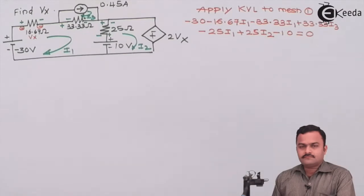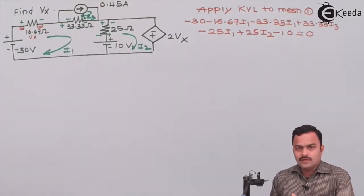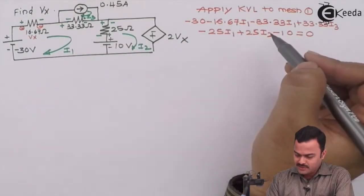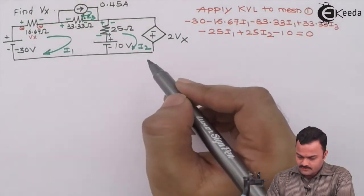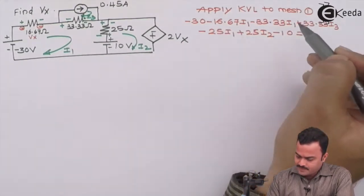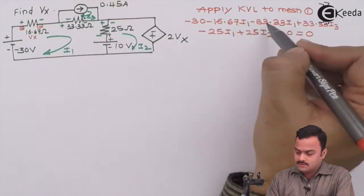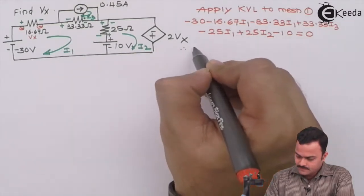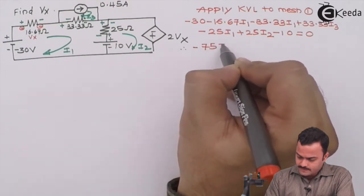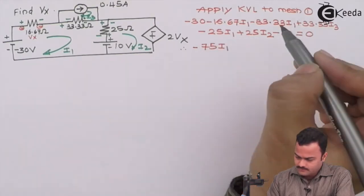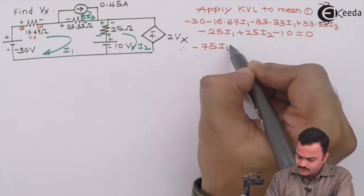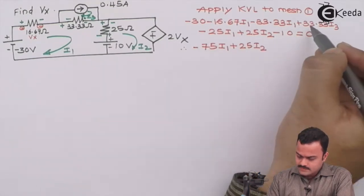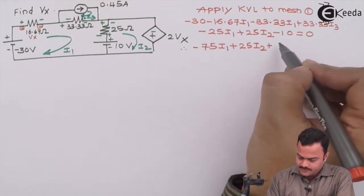It's straightforward, there is no substitution required because we will be having only i1, i2, i3, the variables that we mark at the mesh currents. So let's simplify this. Minus 16.67 minus 33.33 that makes minus 50, and minus 25 will ultimately give us minus 75i1. For i2, that is only one term, 25i2, so plus 25i2.